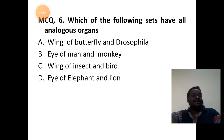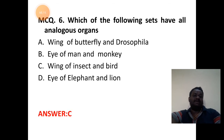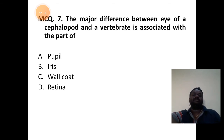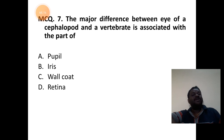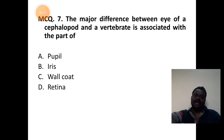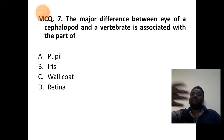Answer C is correct — wing of insect and bird. The major difference between the eye of a cephalopod and of a vertebrate is associated with which part?